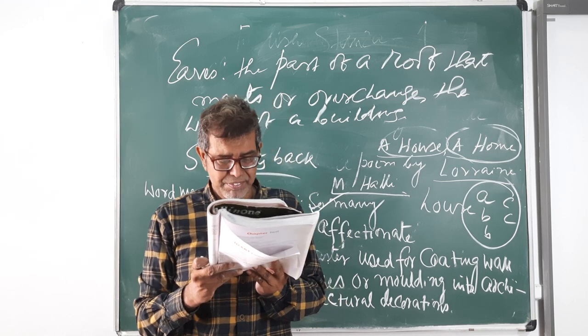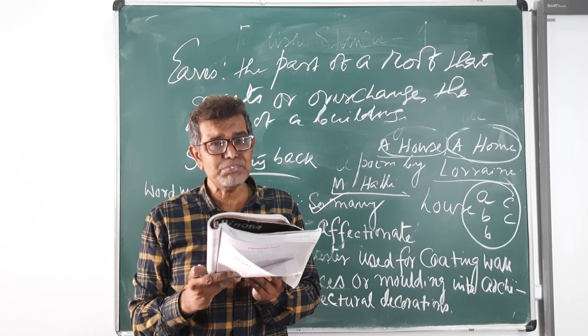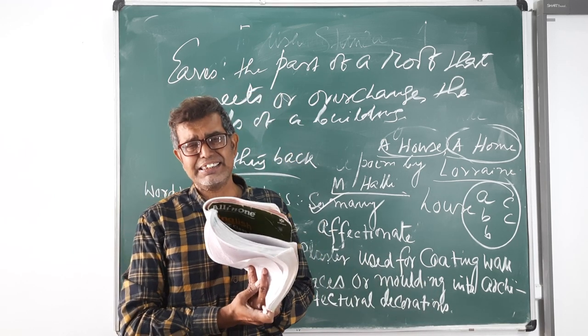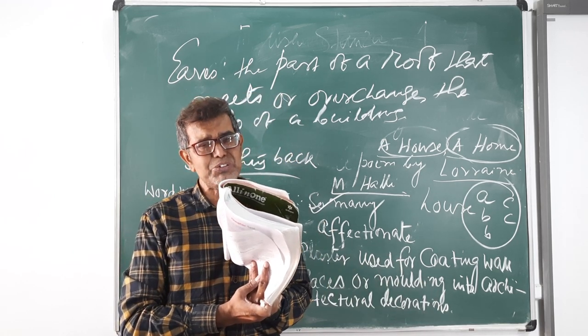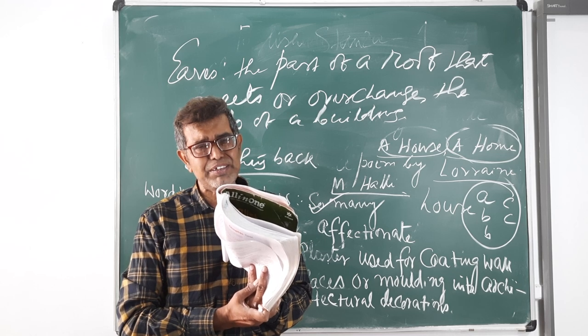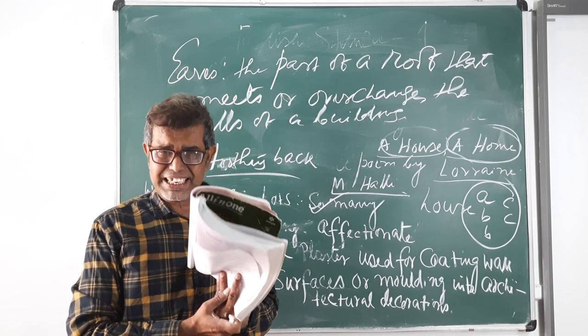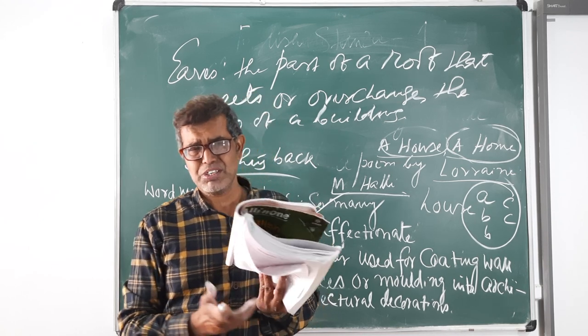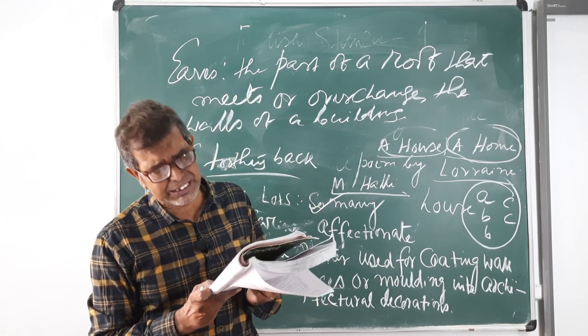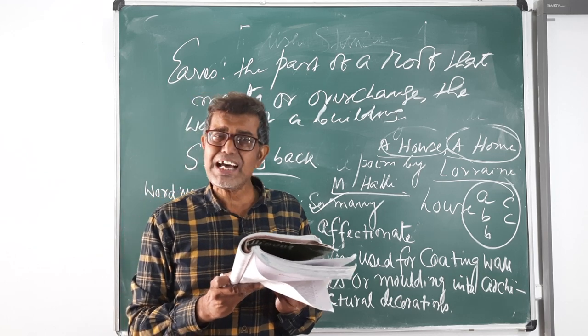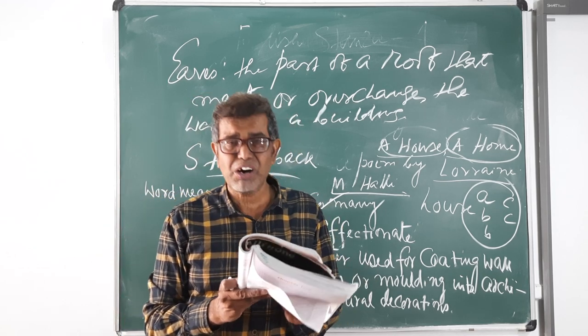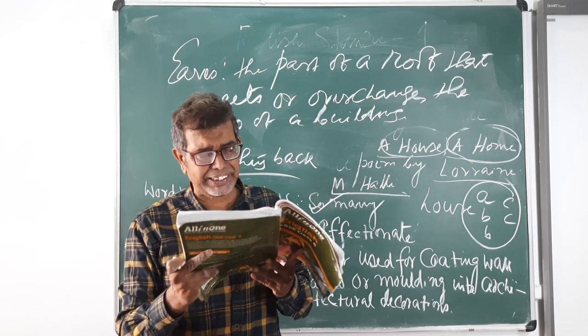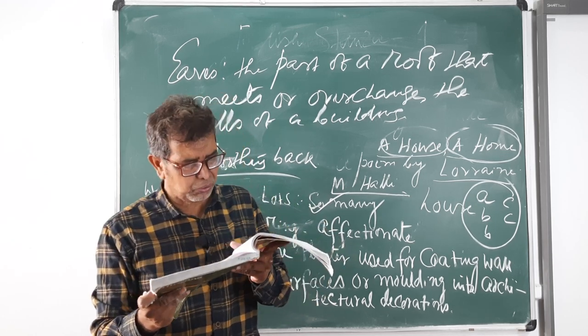Without them, house cannot be called a home. So house being promoted to home when these all emotional values are readily available there, then we can say a house, a home. So house becomes home when these emotional values are there. The poet clearly defines a house and a home through this very very simple poem, that means a house and home.